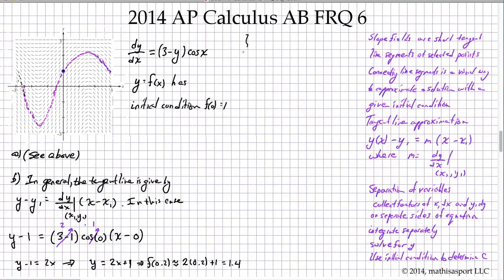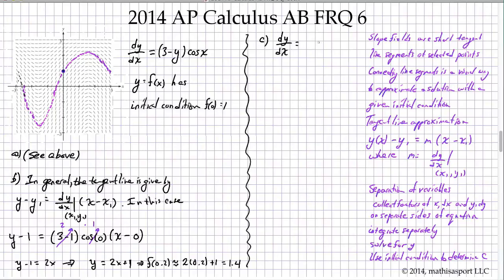What's left is the separation of variables method. Remember: collect factors of x and dx on one side and y and dy on the other side, integrate separately, don't forget the plus C, solve for y, then use the initial condition to determine C. So we have dy/dx equals (3 minus y) cosine x.